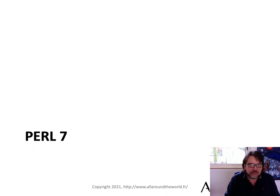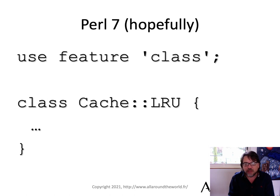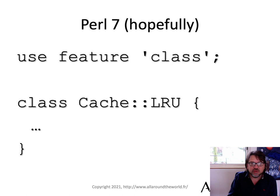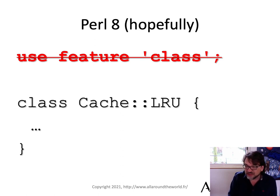It might come in with Perl 7. We don't know what's going to happen with Perl 7 yet because that's been put on hold while Perl governance is being restructured. But at least in Perl 7 or Perl 8, we might get rid of the feature guard and it might become standard in the language without having to worry about the experimental nature of it. If we follow this, we can do a lot more.